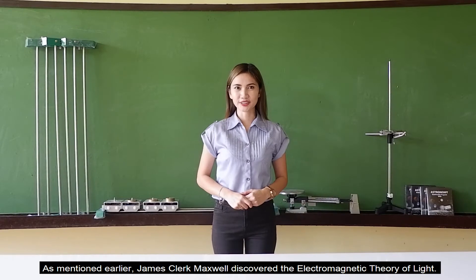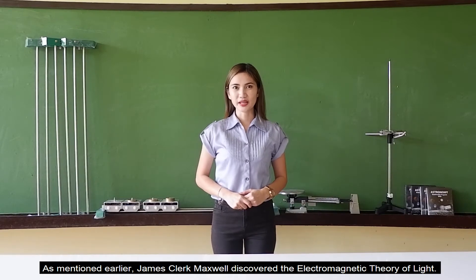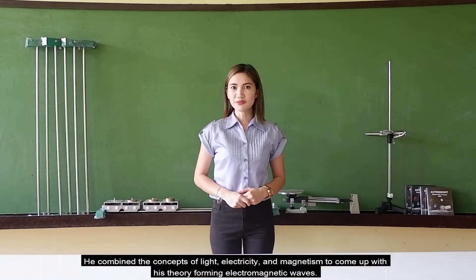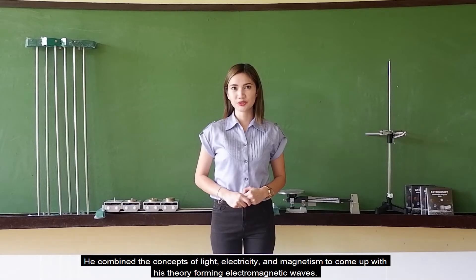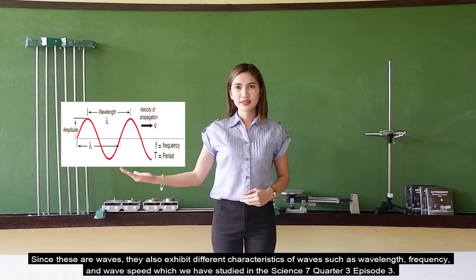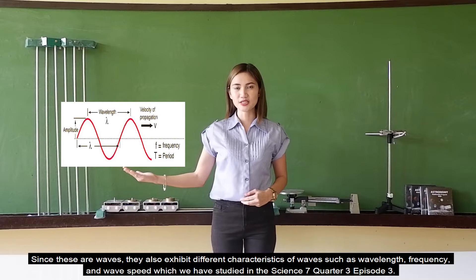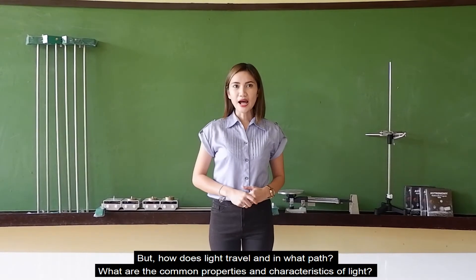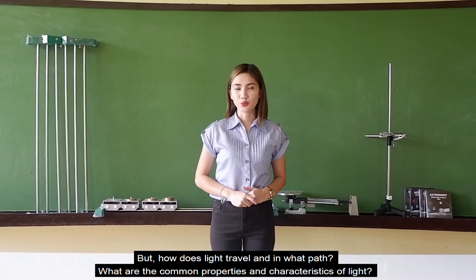As mentioned earlier, James Clark Maxwell discovered the electromagnetic theory of light, combining the concepts of light, electricity, and magnetism to form electromagnetism. Since these are waves, they also exhibit different characteristics of waves such as amplitude, frequency, and wavelength, which we have studied in Science units. But how does light travel, and what are the common properties and characteristics of light?